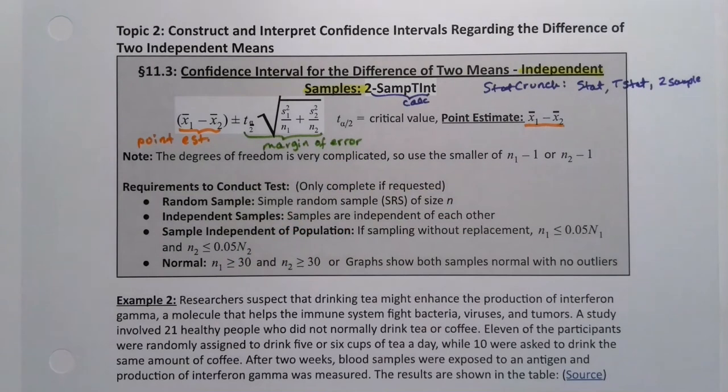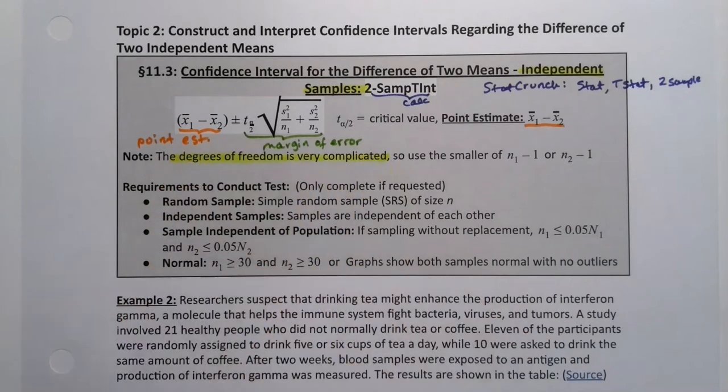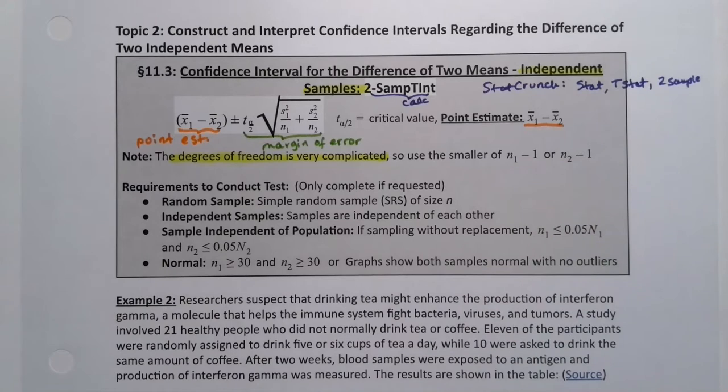You'll notice when we saw this, the degrees of freedom is very complicated. You remember that degrees of freedom we just saw in that previous example, it was decimals and it was a mess. It's actually a really ugly formula. You're welcome to look it up in the textbook, but it's atrocious. It has multiple fractions inside of fractions. So we just tend to use the smaller of n1-1 or n2-1 if we're doing this by hand.